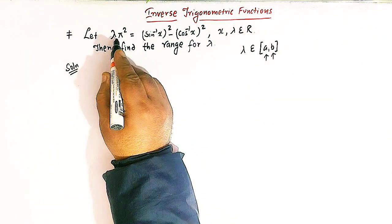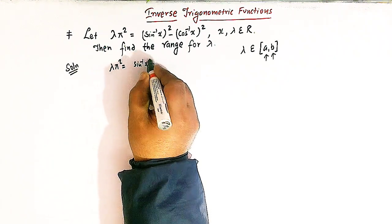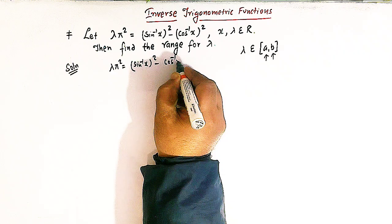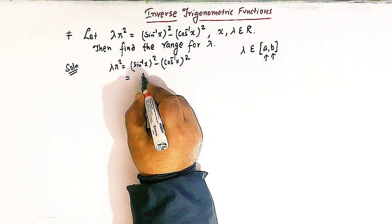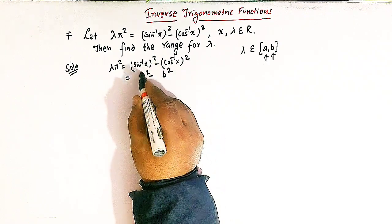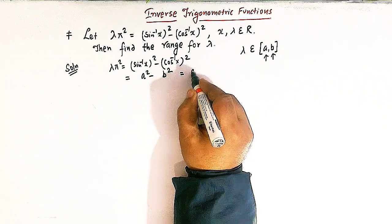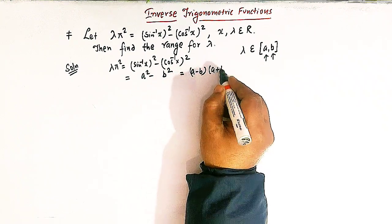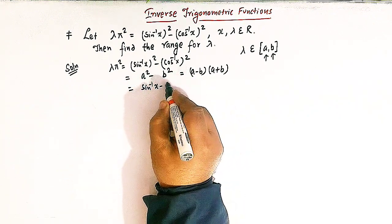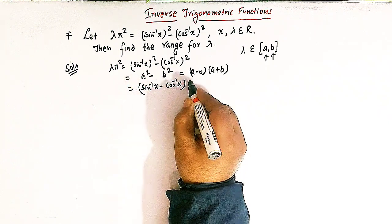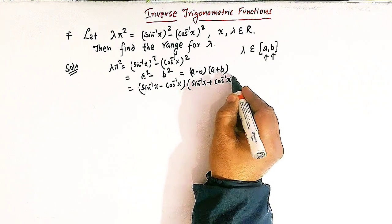Let us start with the expression λπ² = sin⁻¹x² - cos⁻¹x². We will utilize the identity a² - b², where a = sin⁻¹x and b = cos⁻¹x. So a² - b² may be written as (a - b)(a + b), which gives us (sin⁻¹x - cos⁻¹x)(sin⁻¹x + cos⁻¹x).